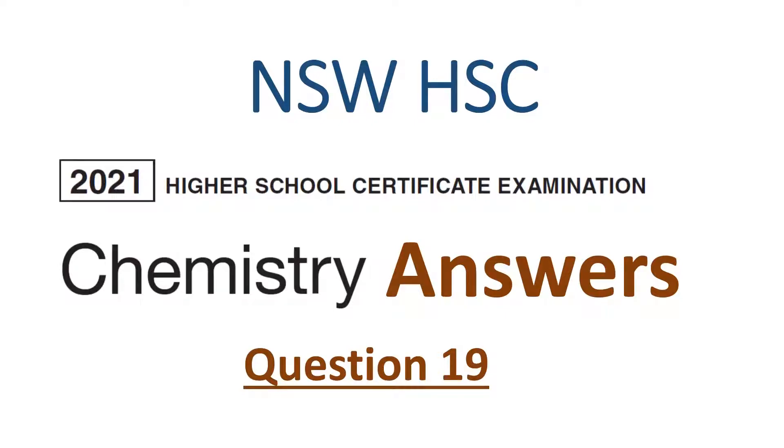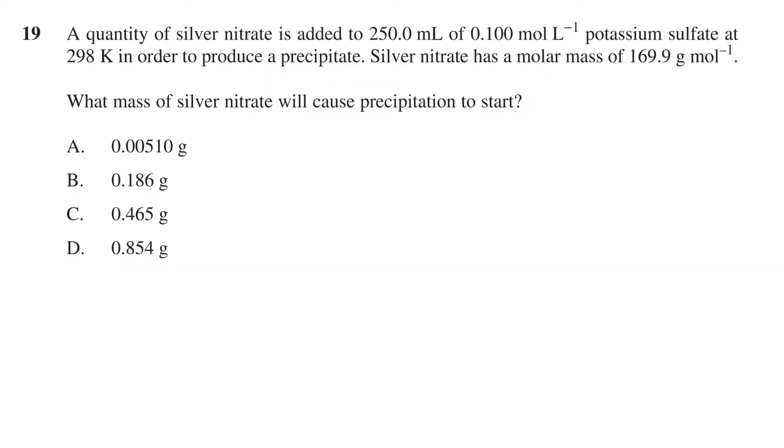In this video we'll go over the answer to question 19 of the 2021 NSW HSC Chemistry exam. The question states a quantity of silver nitrate is added to 250 mL of 0.1 mol per litre potassium sulfate at 298 kelvin in order to produce a precipitate. Silver nitrate has a molar mass of 169.9 grams per mole. What mass of silver nitrate will cause precipitation to start? This is followed by four options between 0.00510 grams and 0.854 grams.